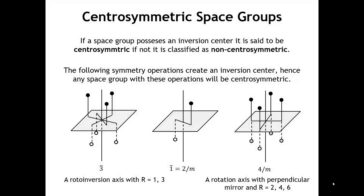All of these properties we just talked about depend most critically on the inversion center. We can divide all crystals into two categories: those that have an inversion center are said to be centrosymmetric, and those that do not are non-centrosymmetric. All of the properties we talked about only occur in non-centrosymmetric crystals.